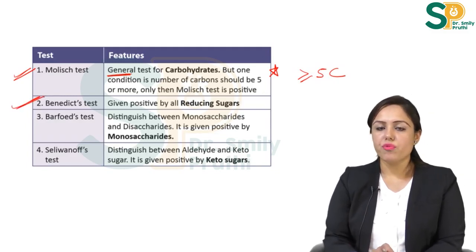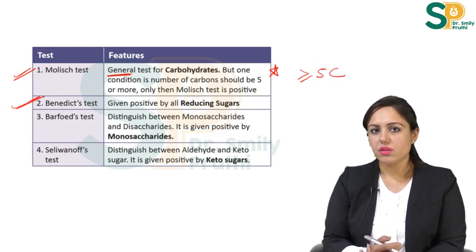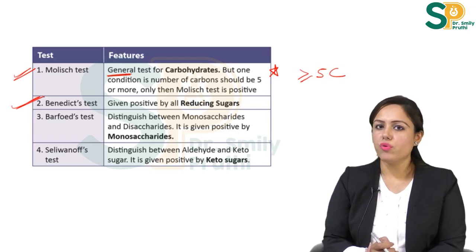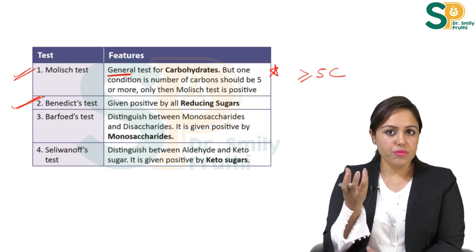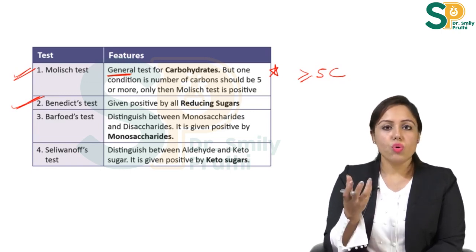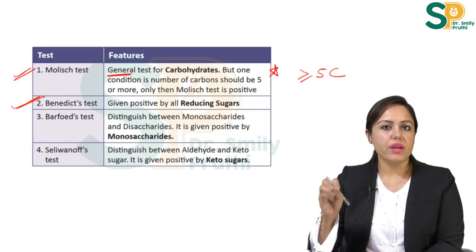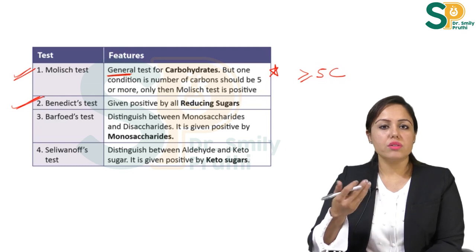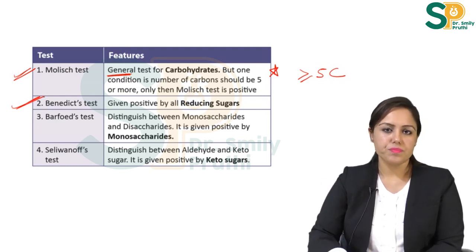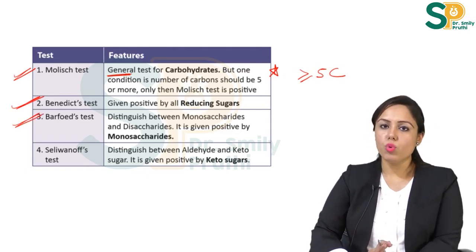Next is the very important Benedict's test, which is given positive by reducing sugars. You know which disaccharide is reducing and which is non-reducing. What about monosaccharides — are they reducing or non-reducing? Monosaccharide means one free carbohydrate unit is present, so all monosaccharides have their functional group free. Therefore, all monosaccharides are reducing and will give a Benedict's positive result.